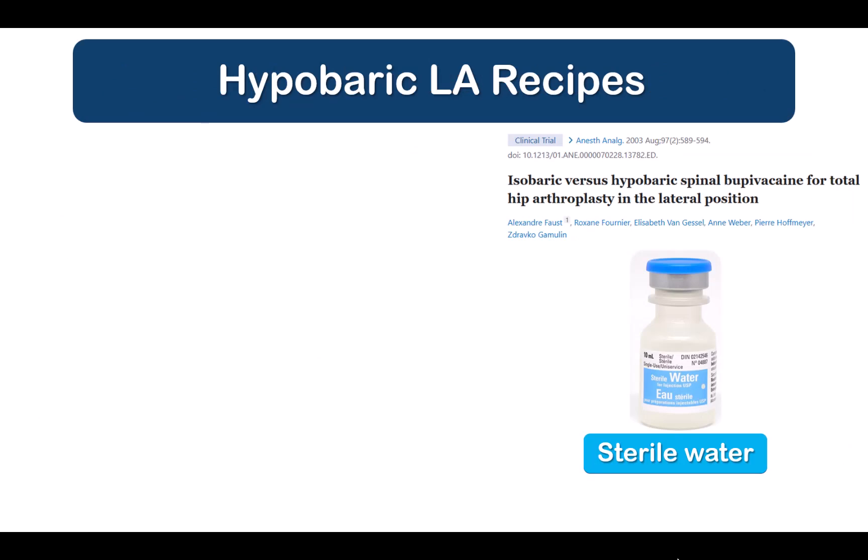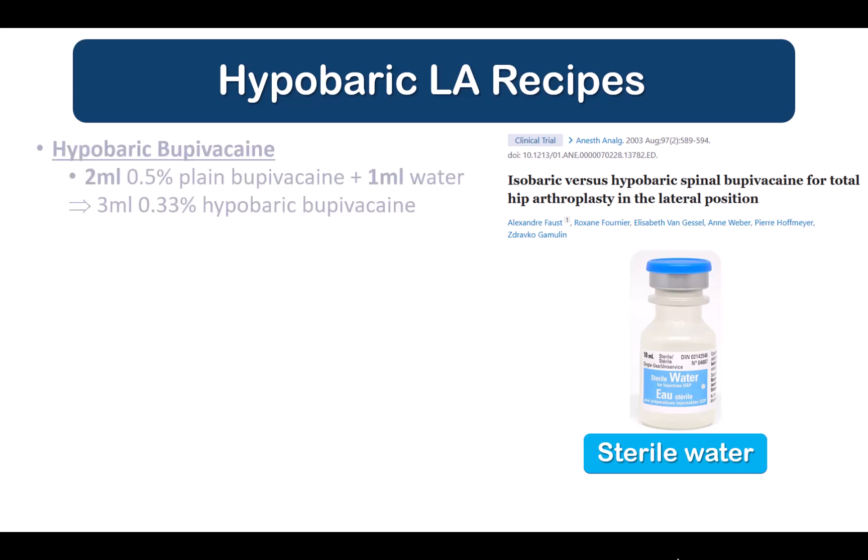Hypobaric local anesthetic solutions can be made by diluting plain isobaric local anesthetic with sterile water — saline will not achieve the same effect due to its sodium chloride content. This has been demonstrated in multiple studies that have used hypobaric local anesthetic mixtures. There are many different recipes out there, but for most total hip and knee surgeries, I mix 2 ml of 0.5% bupivacaine with 1 ml of water to create 3 ml of a 0.33% concentration. Injecting all 3 ml provides a surgical block duration above L1 for about two hours, with patients being able to ambulate within four hours of the spinal.